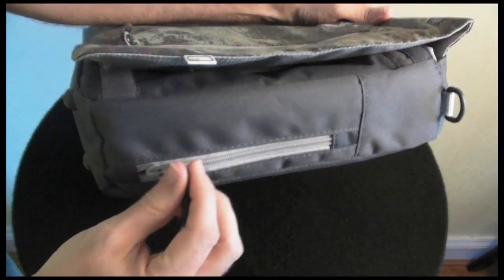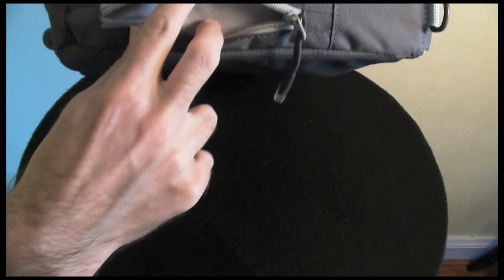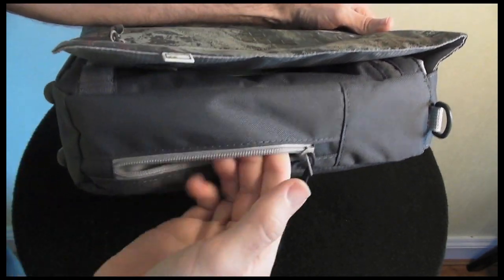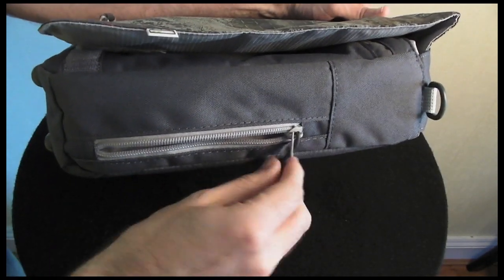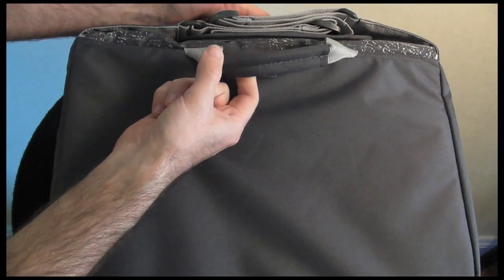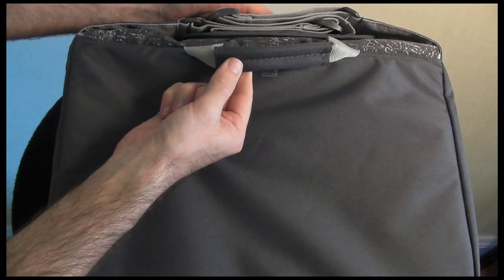Around this side we've got another pocket here and this is just about big enough for fitting something like a mobile phone or some pens and pencils. Around the back of the bag we've got no additional pocket, but we have this handle, just a grab handle if you want to pick the bag up quickly.